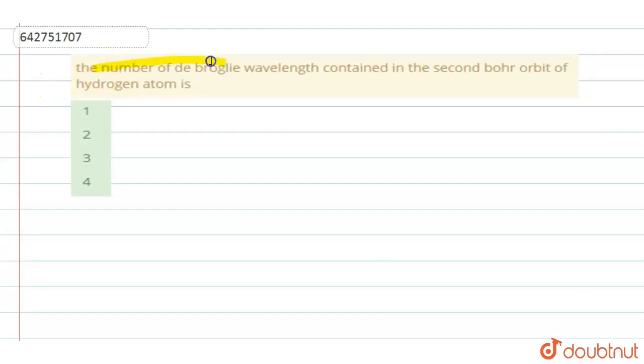The number of de Broglie wavelengths contained in the second Bohr orbit of hydrogen atom is: